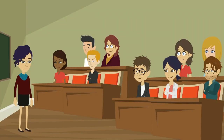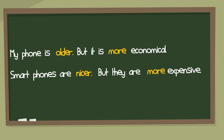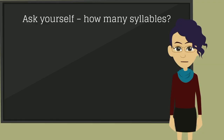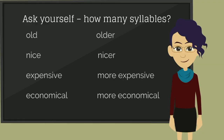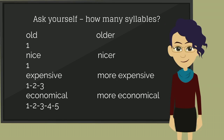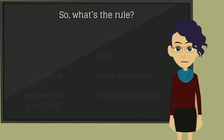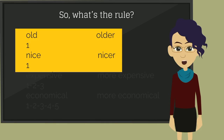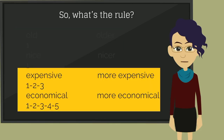Now, let's look more closely at what they said. Ask yourself: how many syllables? So, what's the rule? For one-syllable adjectives, add E-R at the end of the adjective. For most adjectives of two or more syllables, add more before the adjective to form the comparison.